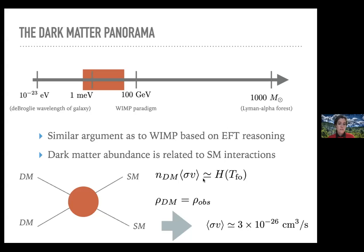The annihilation rate to the standard model, sigma v, continues until the number density becomes small enough that the annihilation rate drops below the Hubble parameter. We fix the observed dark matter density to what we see today, which allows us to fix, up to a logarithmic dependence on the mass scale, a thermal relic cross section on the order of 3×10⁻²⁶ cm³/s.